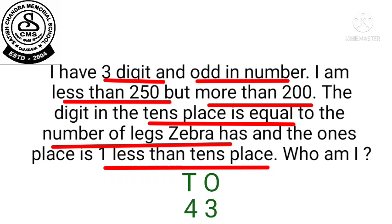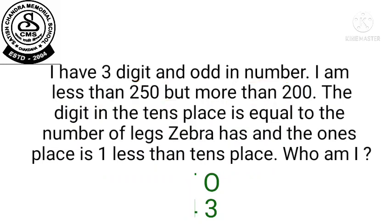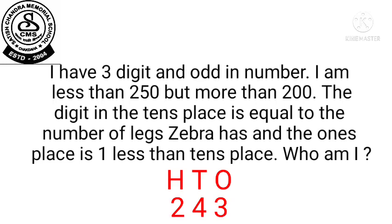So the 1's place digit will be 3. Now for the 100th place, children, you can see in the second line it is given that the number is less than 250 but more than 200. That means the 100th place digit will be only 2. So now, what number are we getting? We are getting 243.